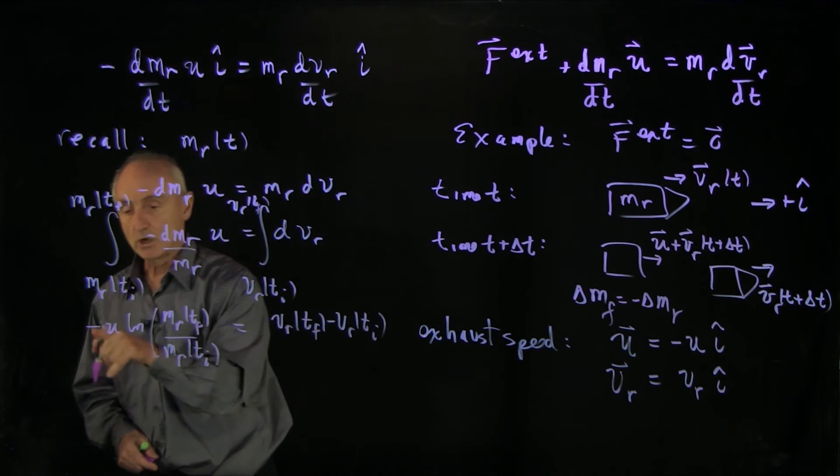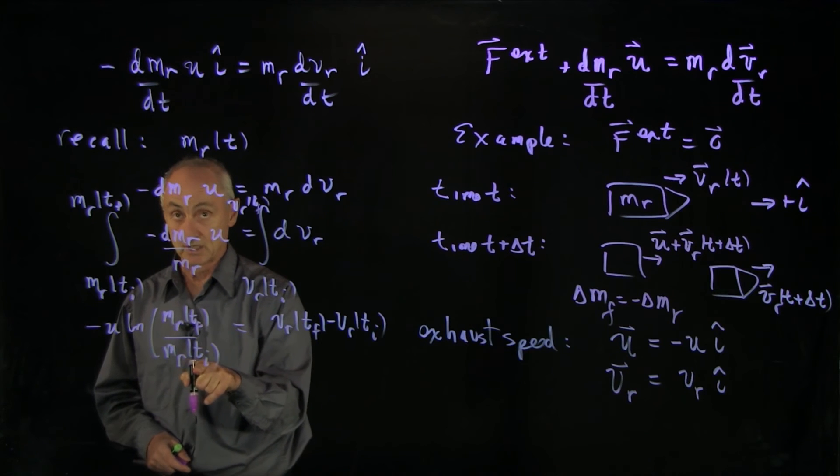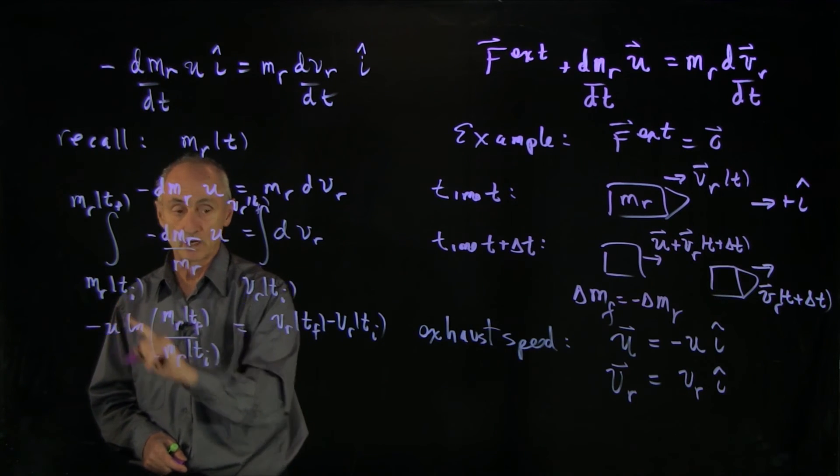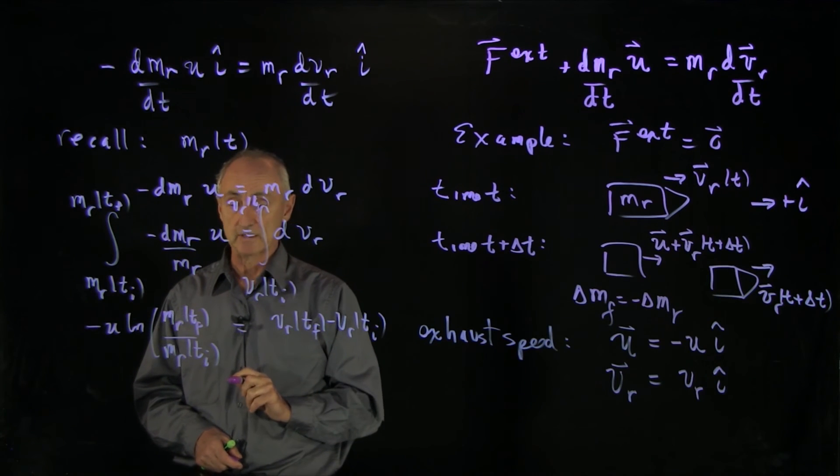Now, again, we always check our minus signs. But recall, the mass of the rocket is decreasing. So the log of a fraction is negative. So we have a positive quantity on this side. And that's indicating that the velocity has increased on that side.